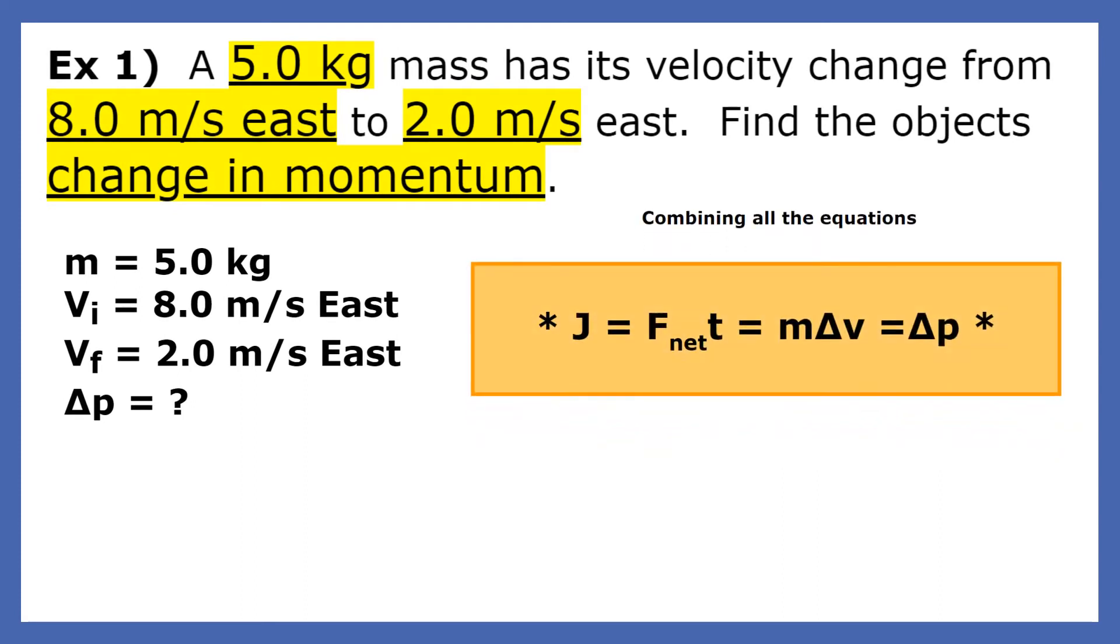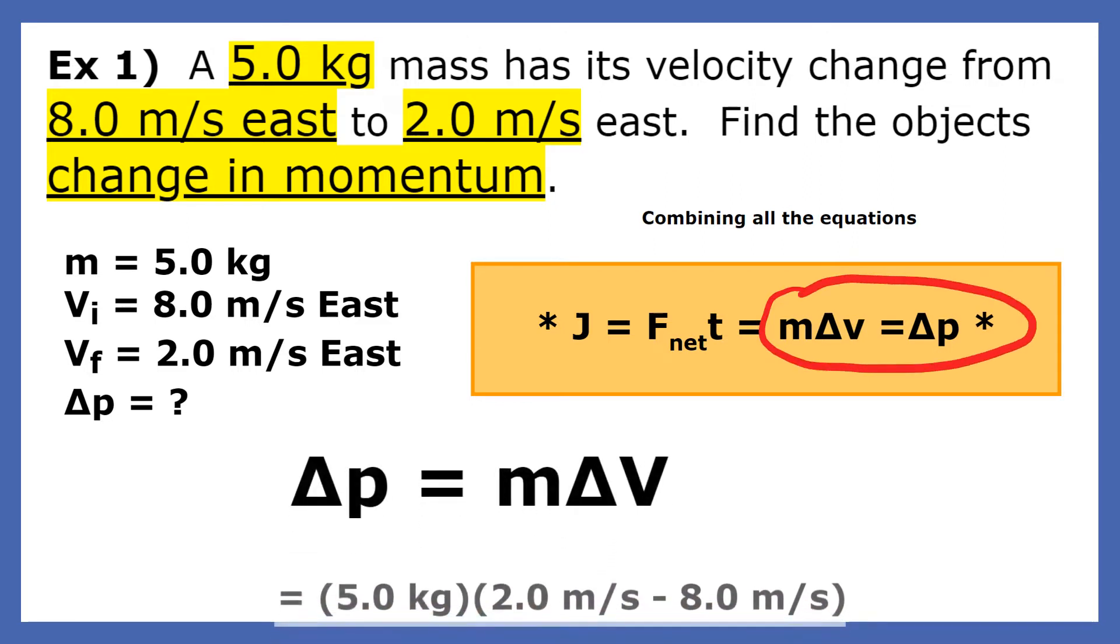When you plug in the mass and velocity, make sure you remember that the delta v is the final velocity minus the initial.